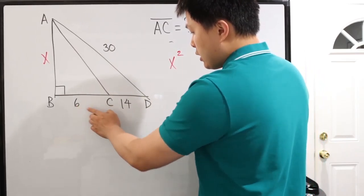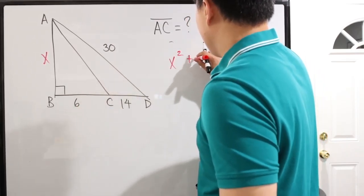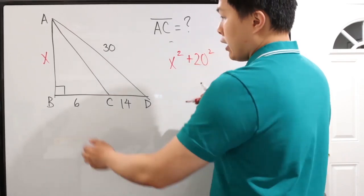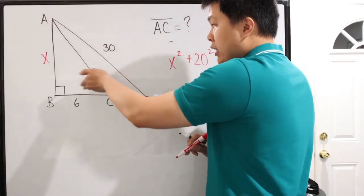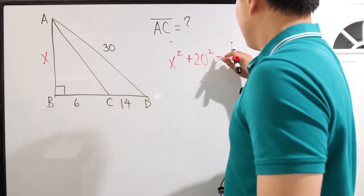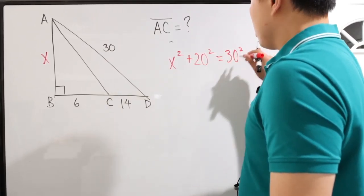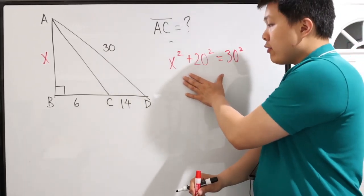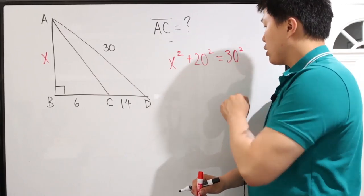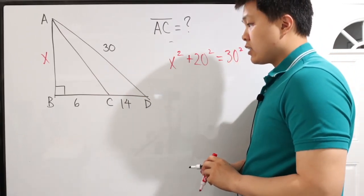this guy right here. What is that? 6 plus 14 is 20. 20 squared, A squared, B squared equals 30 squared. Okay, so we have this right here. X squared plus 20 squared equals 30 squared. That lets us find X.